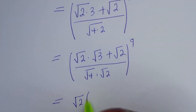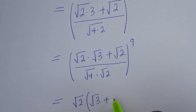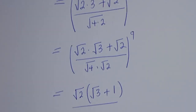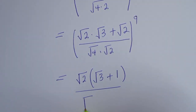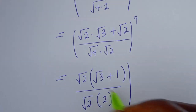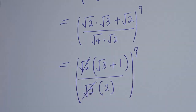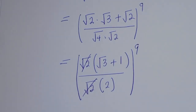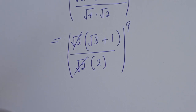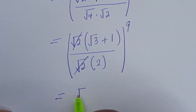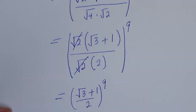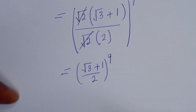We have square root of 2 bracket: this divided by this — we have root 3 plus 1 divided by square root of 4. Bring it out: bracket square root of 4, all to the power of 9. This cancels, and this is equal to root 3 plus 1 over 2, all to the power of 9.